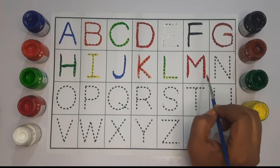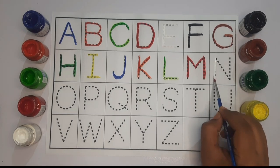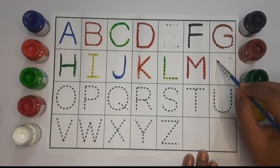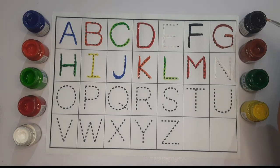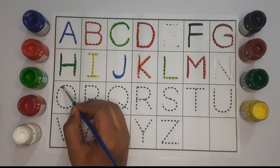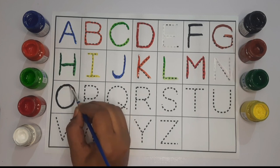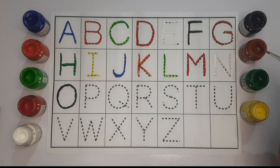This is M. Now we will use white color to write N. This is N. Now we will use black color to write O. This is O.